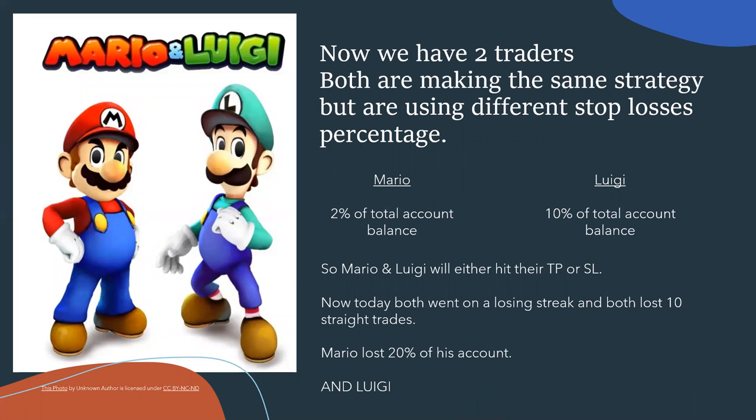Now we have two traders — Mario and Luigi — both using the same strategy but with different stop loss percentages. Mario is using two percent of his total account balance, and Luigi is using ten percent of his total account balance. They go on the same trade using the same stop loss placement, but Luigi is risking a much higher percentage of his account. Then they both hit their stop loss.